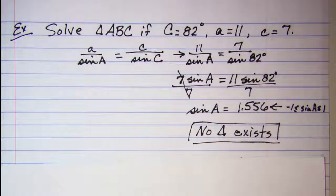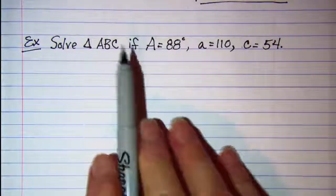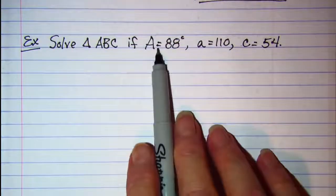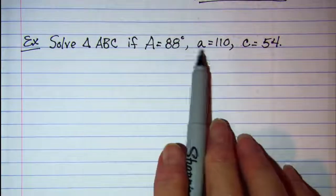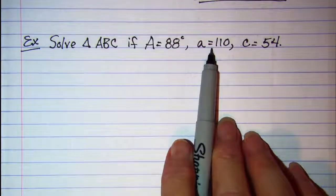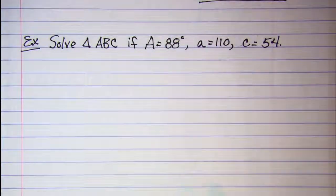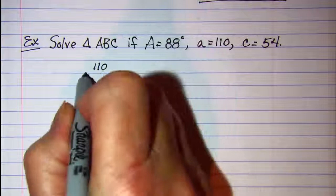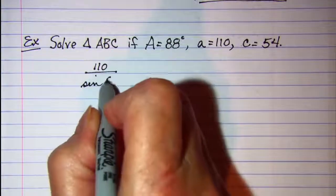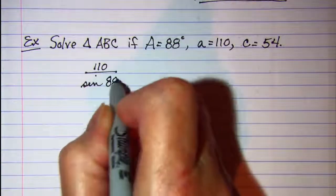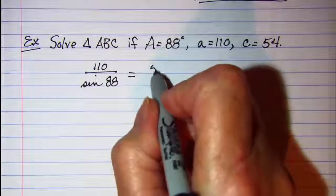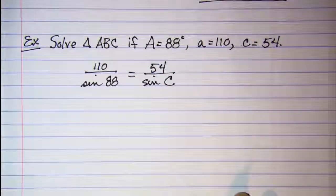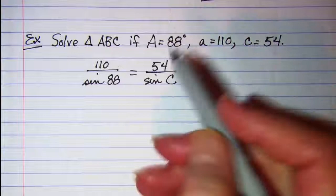Let's do another one. Okay, again we're given one angle and two sides, and this angle is across from the side A. So, we'll set up our law of sines. Side A is to the sine of angle A, as side C is to the sine of angle C.